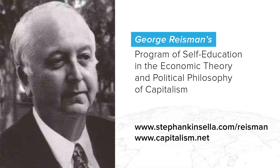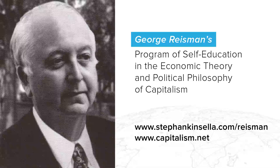Even if a saving in the quantity of labor is not involved in a cost reduction, the ability to produce something with a less costly material, or with less costly labor — say unskilled labor in place of skilled labor — still brings about a net increase in aggregate production. Because what happens is that the more costly material or labor is released to expand the production of something comparatively important, while the less costly material or labor is withdrawn from producing something comparatively unimportant.